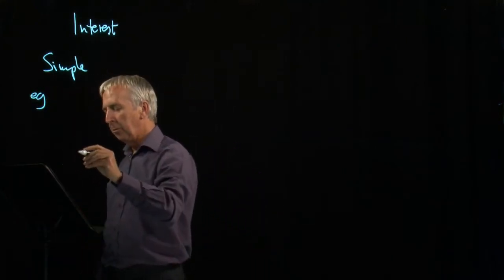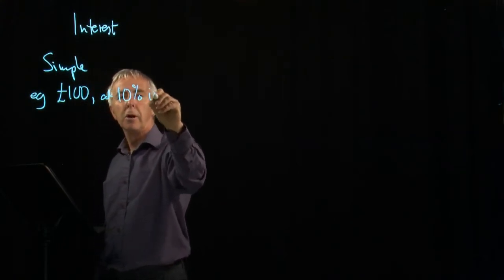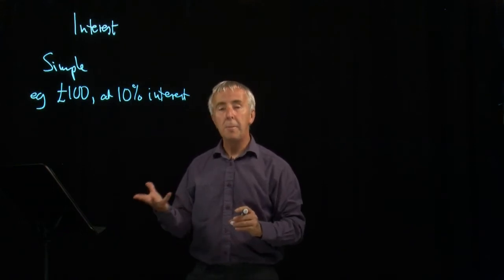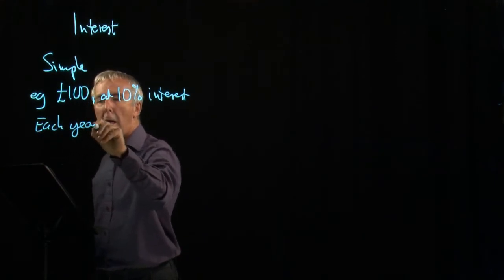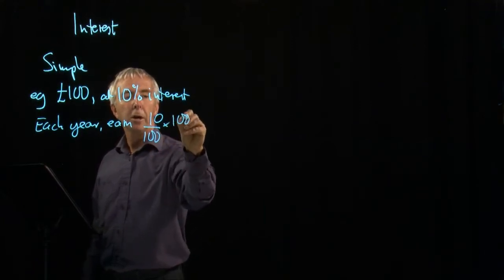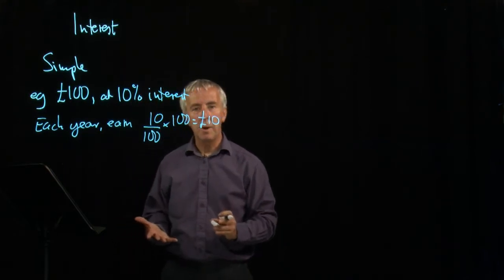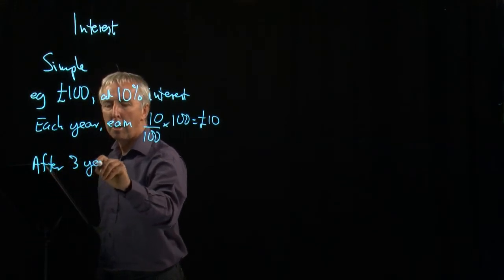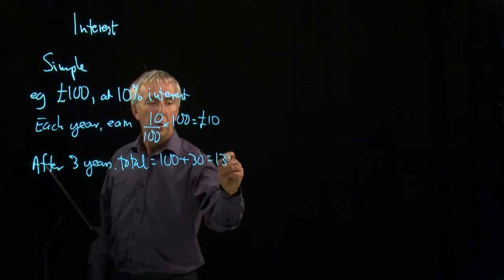Suppose you have £100 and you invest it at 10% interest. That means each year you get 10% of what you put in, 10% of 100 which is £10. So each year you earn 10% which is 10 hundredths of what you put in, so you get £10. For example, after three years you'll have earned £30 and your total will be 130, 100 plus 30 which is 130.